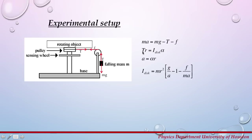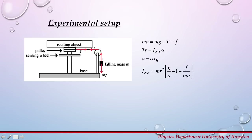So we get T times r equals the moment of inertia of the disk times the angular acceleration. Using the relationship between linear acceleration and angular acceleration, we can solve for the moment of inertia of the disk and get this equation: moment of inertia equals m r squared times (g over a minus 1) minus f divided by ma. Here small m is the falling mass, r is the radius of the pulley, and the value for r will be given to you by your instructor.